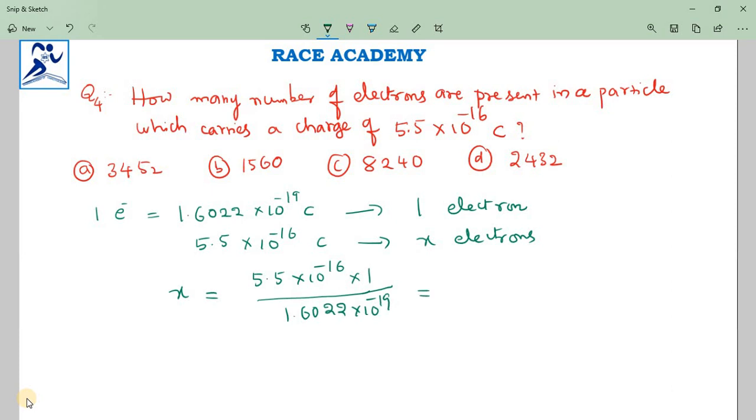Upon simplification, if you take 5.5 as approximately 6 and 1.6 as approximately 1.5, we get close to 4. This gives us 3432 upon simplification.